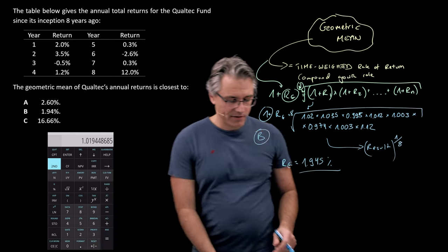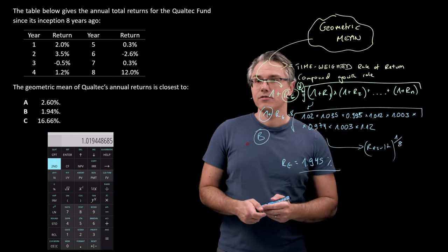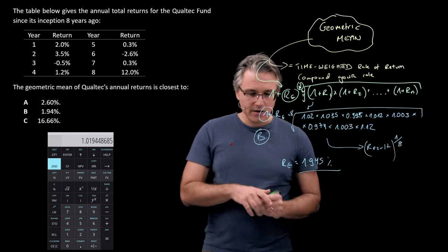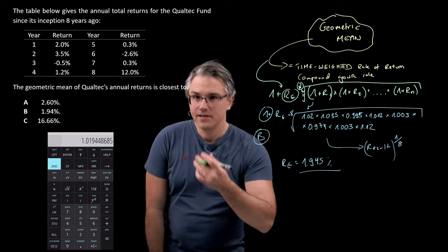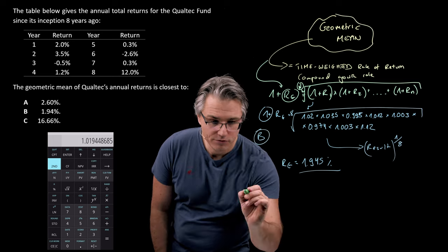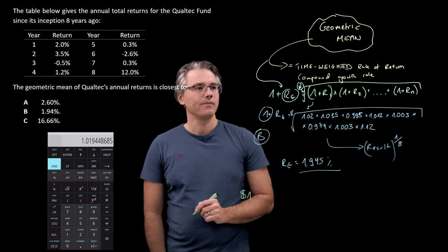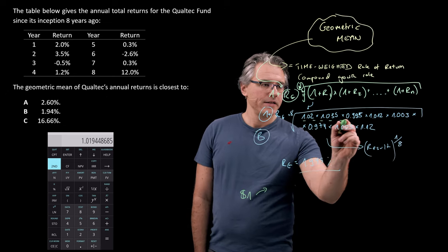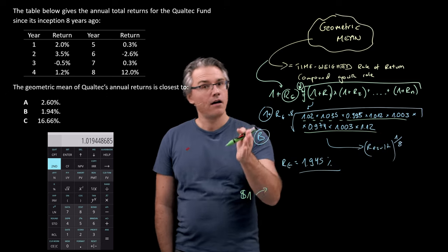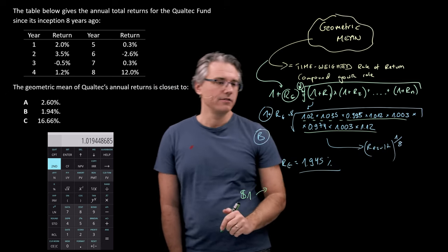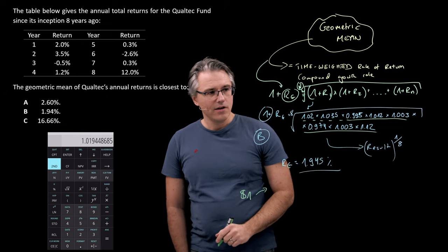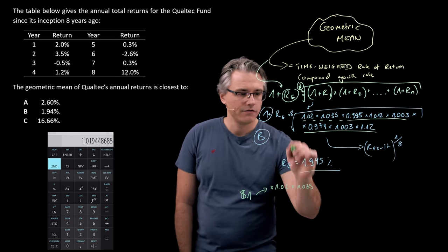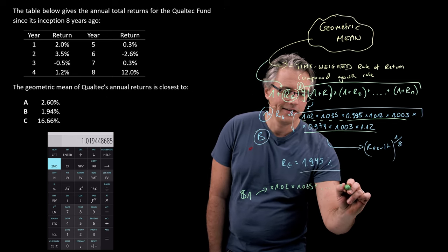Now, what does this geometric mean stand for and why is it so useful? Well, it shows you the compound rate of growth. So if you had a symbolic 1 pound, 1 dollar, 1 euro invested into the fund, it would over time grow by these factors every year, either going up or going down, depending on the fund performance. So times 1.02 times 1.035, you know, and I'm saying that in the end you would, in the final year, have times 1.12.